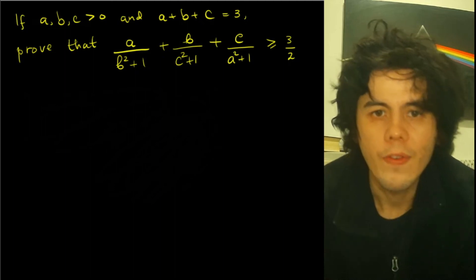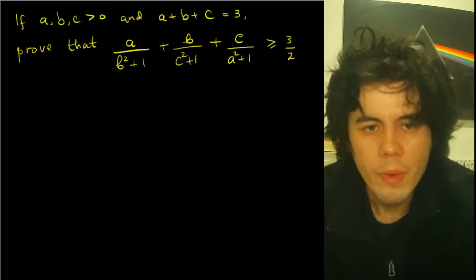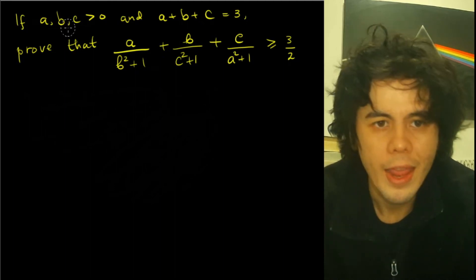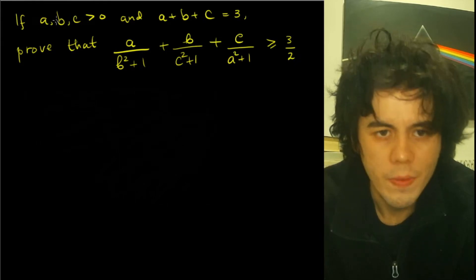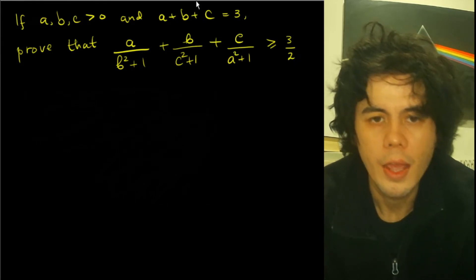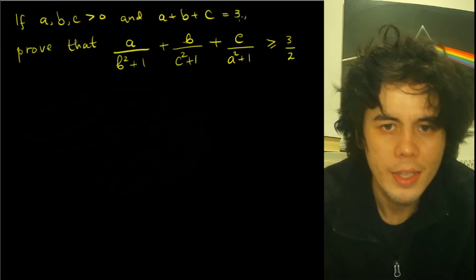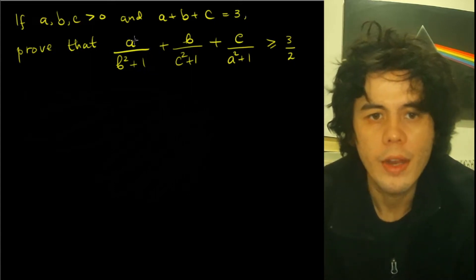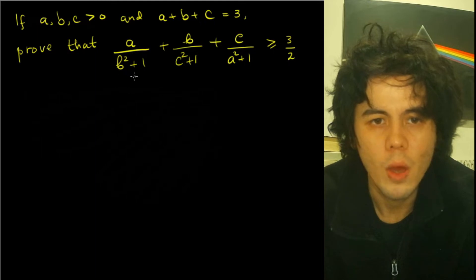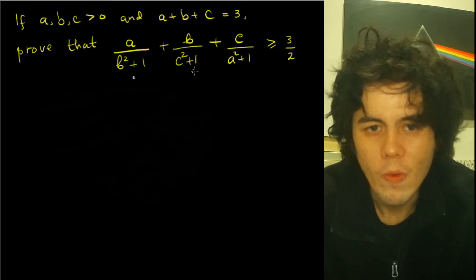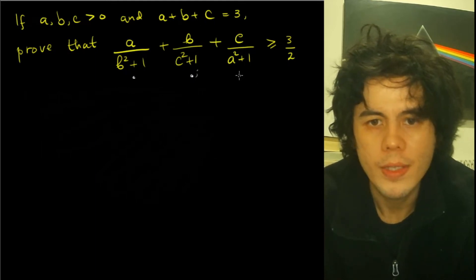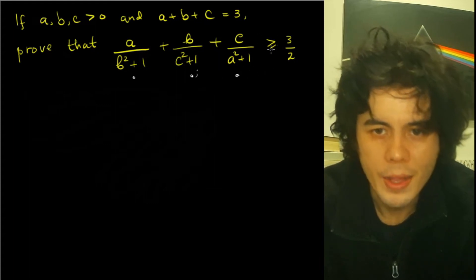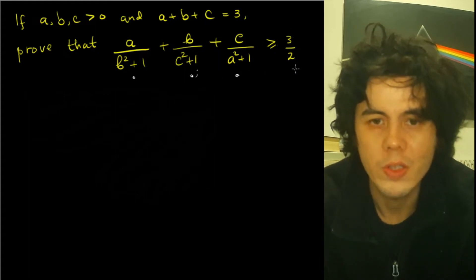Here we have an inequality problem. Given that A, B, and C are positive numbers and A plus B plus C is equal to 3, we have to prove that A over B squared plus 1, plus B over C squared plus 1, plus C over A squared plus 1, is bigger than or equal to 3 over 2.